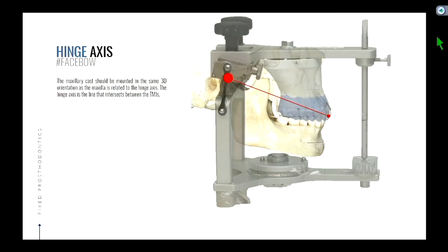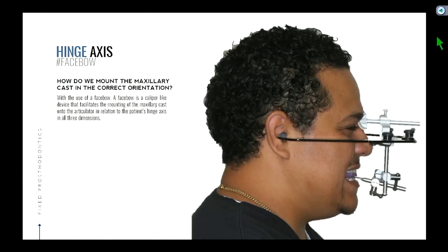You can see how this instrument starts to mimic what our jaw does. The maxillary cast should be mounted in the same three-dimensional orientation as the maxilla is related to the hinge axis — the line through the heads of the condyles, or on your articulator, the line through the two big balls. To mount the maxillary cast in the correct orientation, we use a device called a face bow — a caliper-like device that helps us get the correct distance and orientation in all three dimensions.